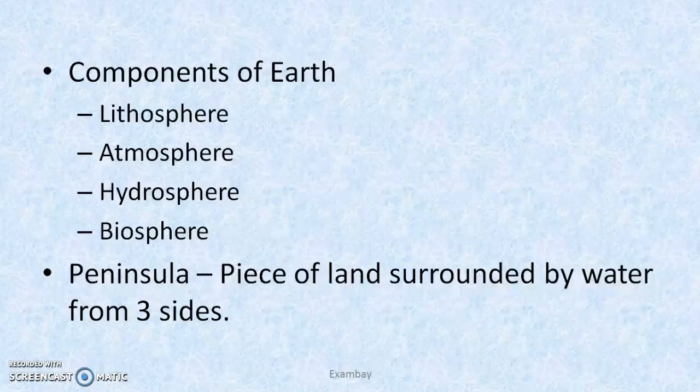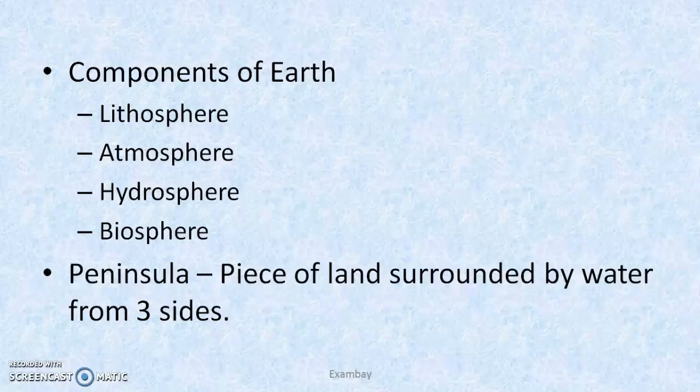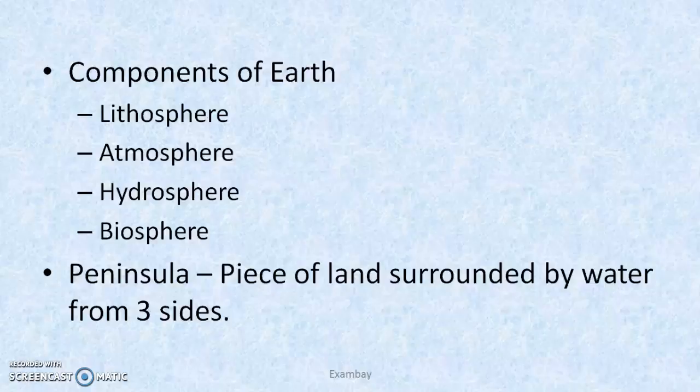Components of Earth: lithosphere, atmosphere, hydrosphere, biosphere. Lithosphere is related to soil and rock. Atmosphere is related to air and has many layers — troposphere, stratosphere, etc. Hydrosphere includes oceans, lakes and rivers — all water-related. Biosphere is where all these components meet and where we live — on and above the Earth's surface, where soil, air and water coexist and where life exists.